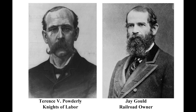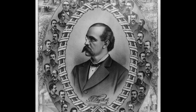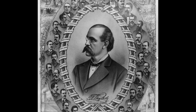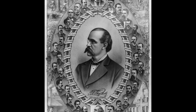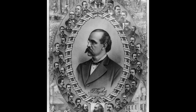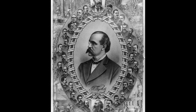In a widely publicized meeting, Terence Powderly, head of the Knights, and Jay Gould reached an agreement. Powderly would end the strike, and Gould would stop targeting Knights members for layoffs. Workers across the nation rushed to join the Knights, and the huge expansion in membership led to loss of control and disorder.